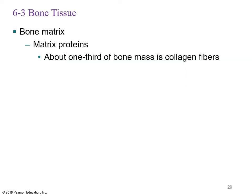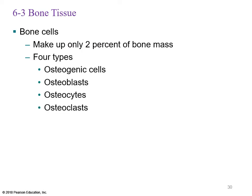Connective tissues are made up of cells, fibers, and ground substance. Combining fibers with ground substance gives the matrix. The matrix and matrix proteins make up about one-third of bone mass, and one-third of that matrix is collagen fibers — a very important protein. Bone cells make up only two percent of bone mass. There are four types of bone cells: osteogenic cells, osteoblasts, osteocytes, and osteoclasts.